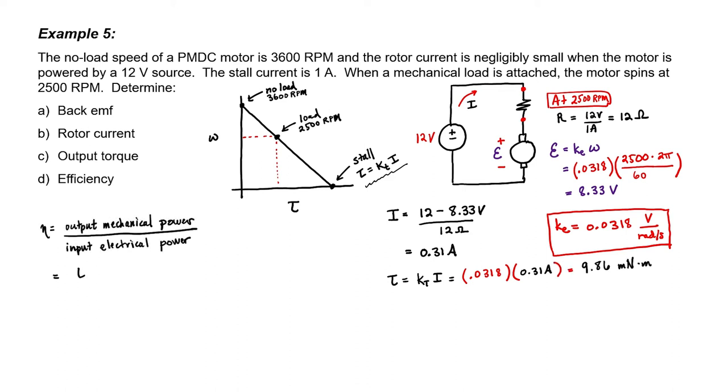We're now left with only the efficiency. Since I know the torque, the speed, the current, and the voltage, I have enough information to find the efficiency. This motor is 69.4% efficient.